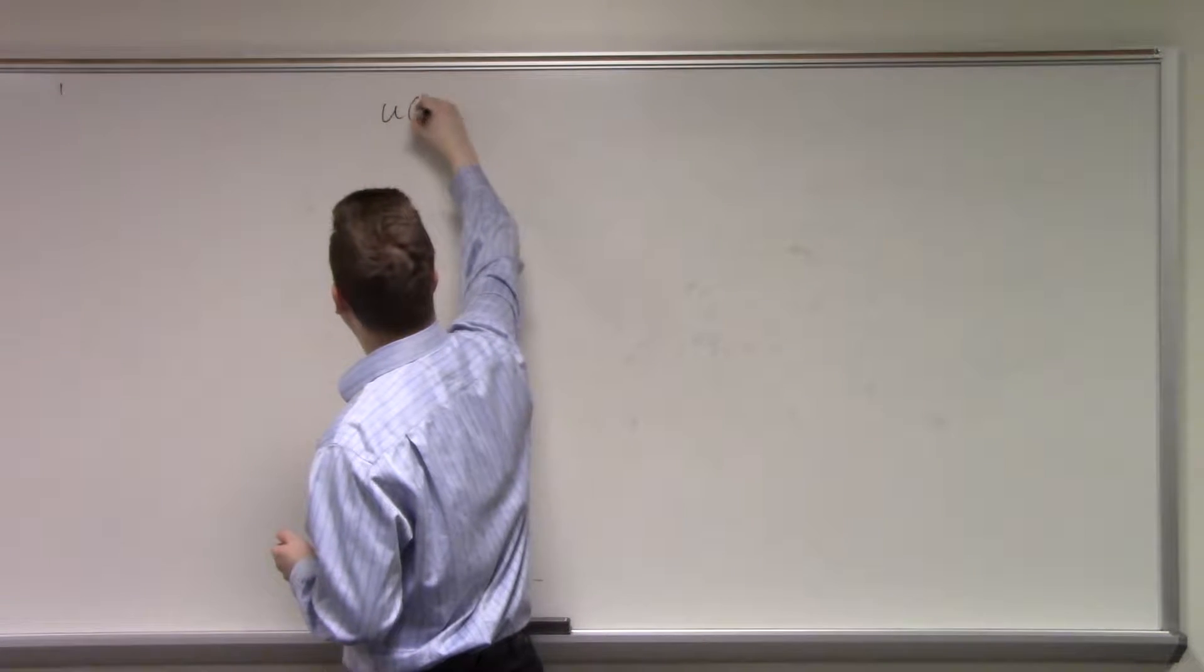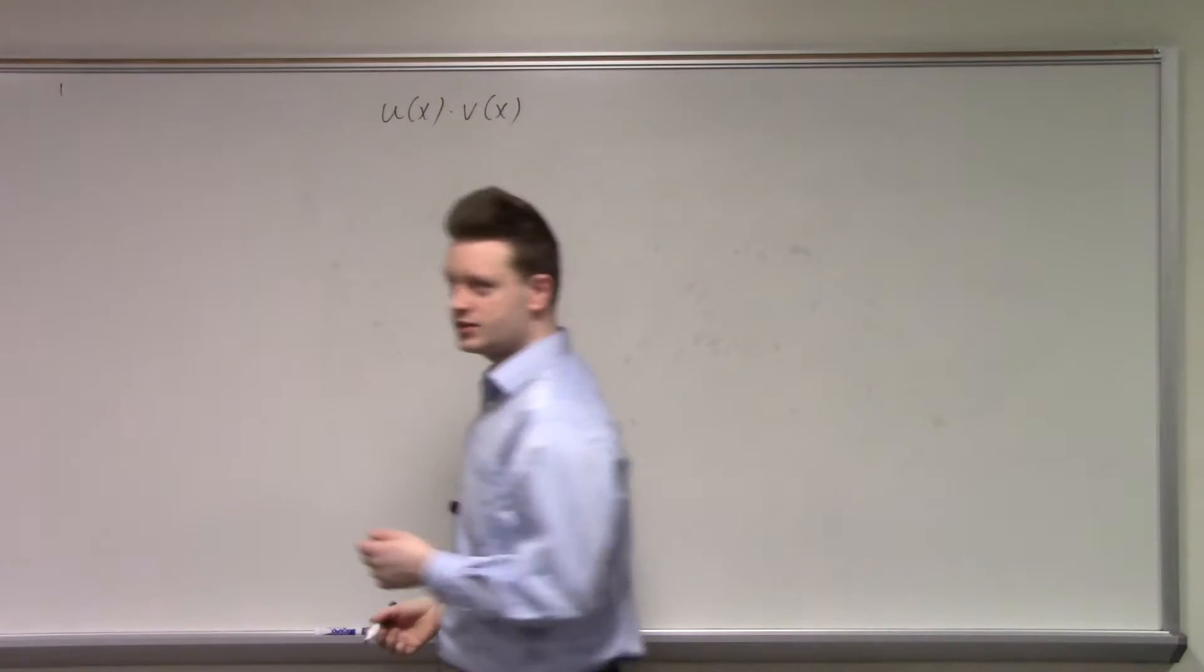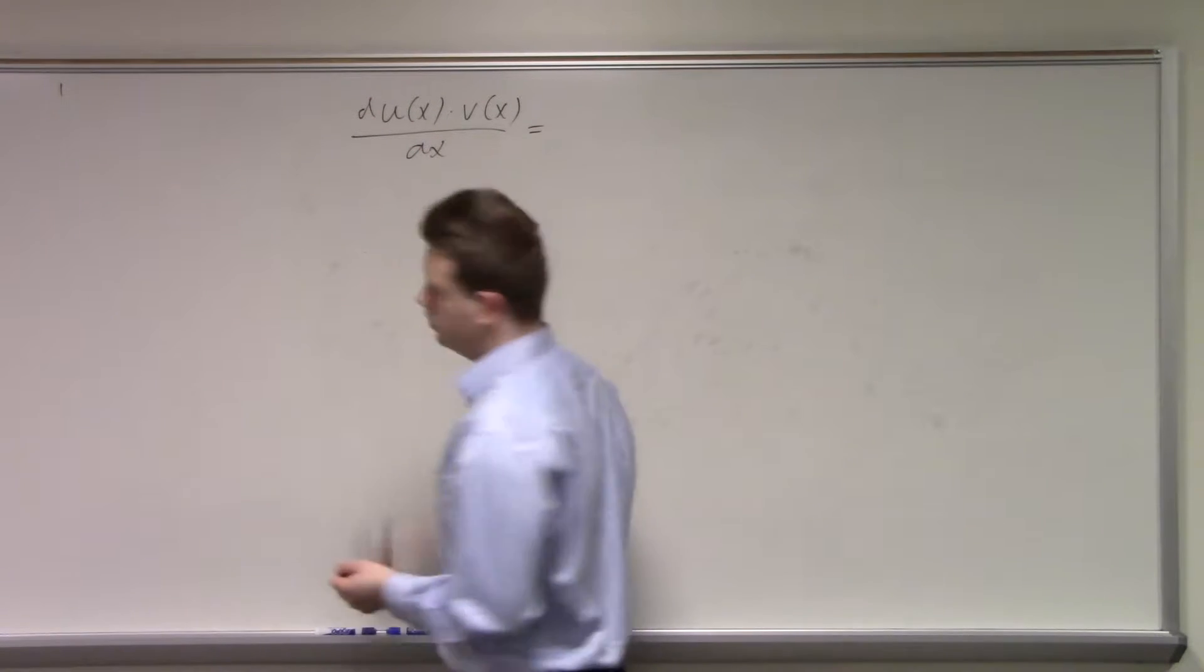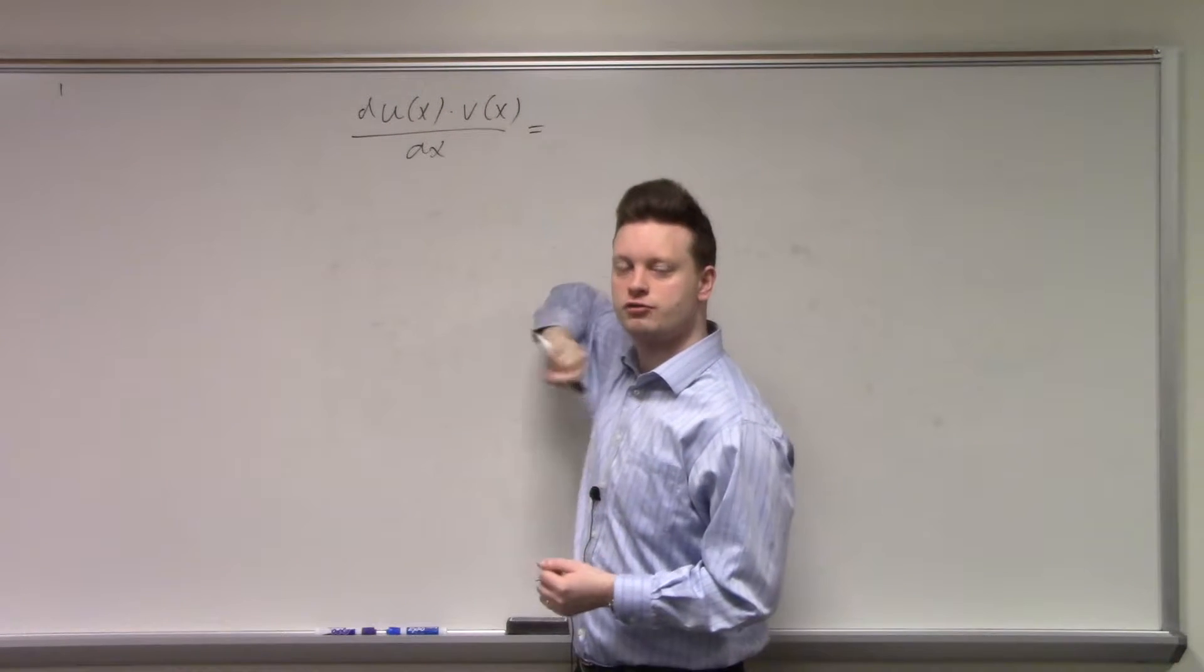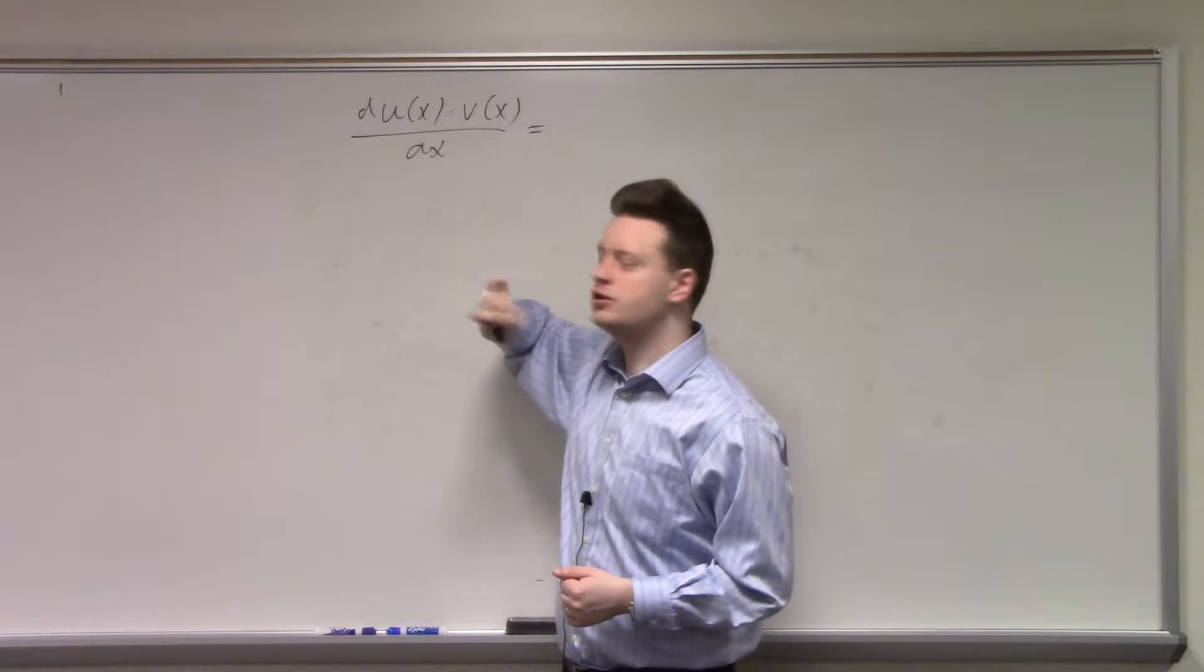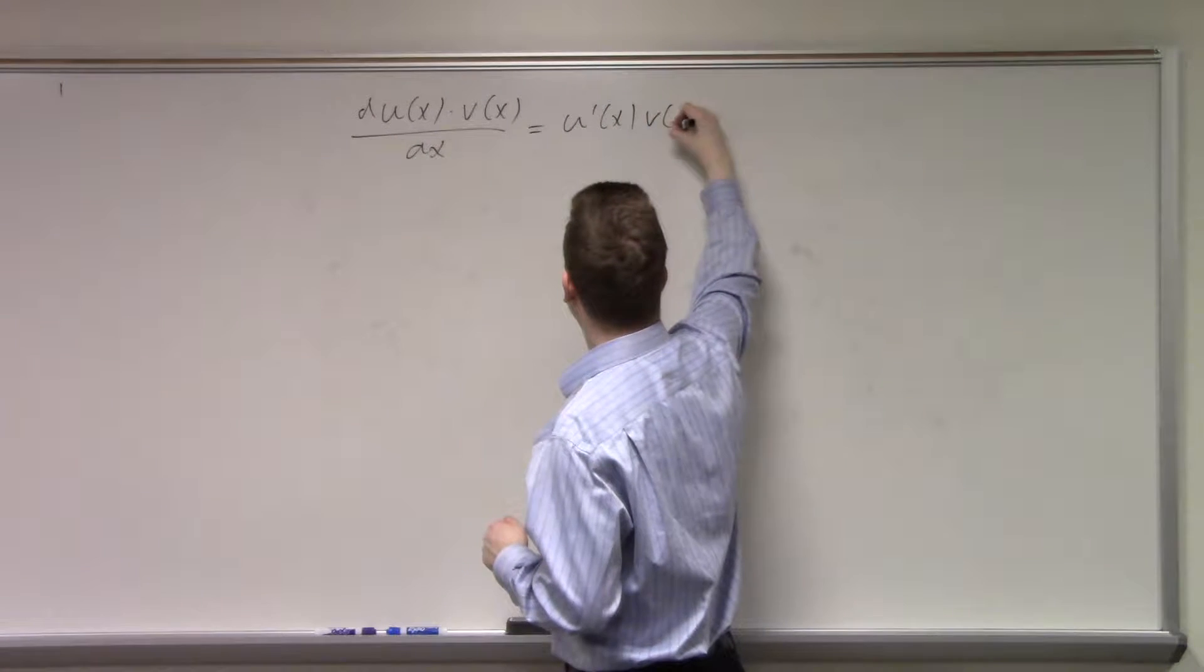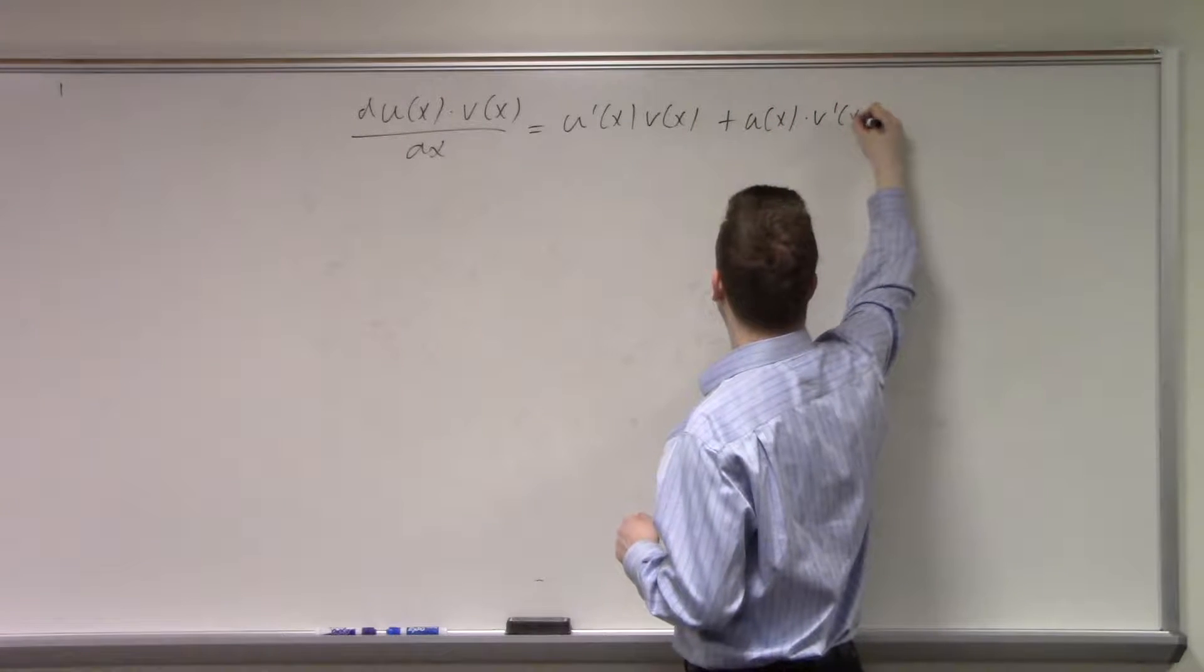If you have two functions, u(x) multiplied with v(x), and you want to differentiate them, you first differentiate the first function multiplied by the second function not differentiated, then add the second function differentiated times the first function not differentiated. So we get u'(x) times v(x) plus u(x) times v'(x).